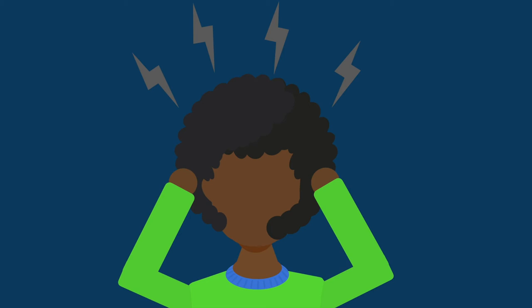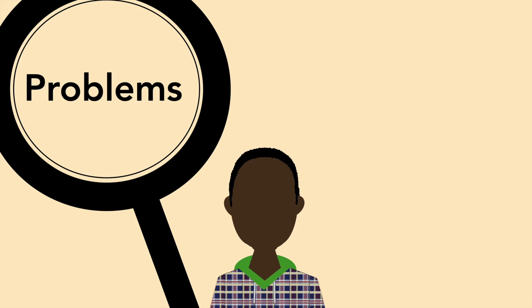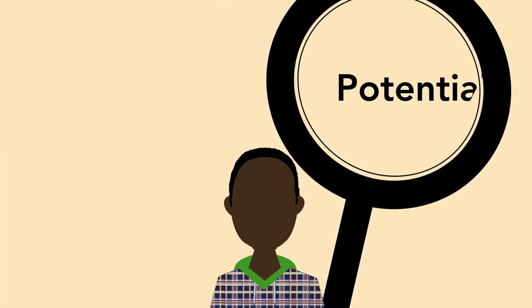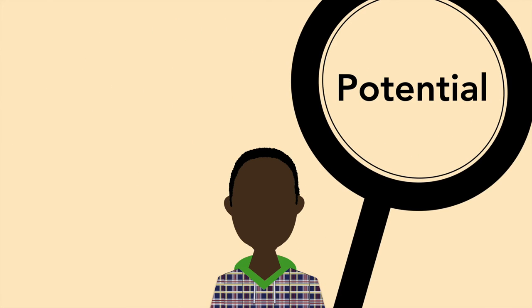When reviewing a peer's writing, you should consider yourself a friendly reader. Opening up to criticism can cause a great deal of anxiety, particularly for people who have had negative or limited experiences with writing in the past. If you only pay attention to problems in your feedback, you might discourage your peer, and you'll likely overlook areas rich with potential.